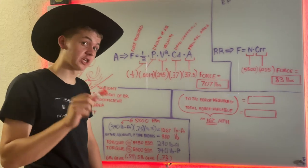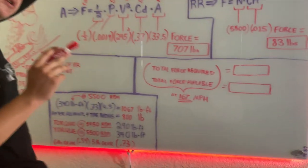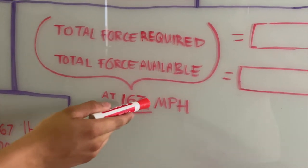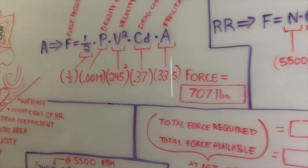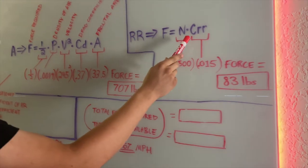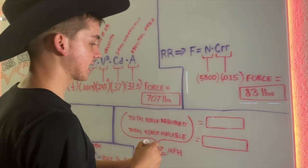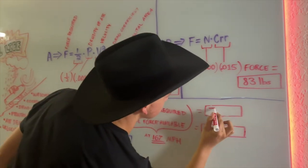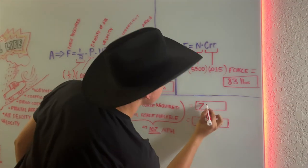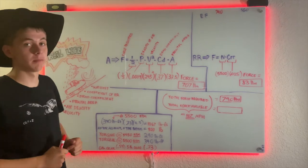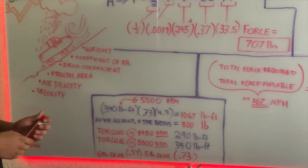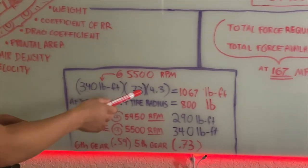This made a lot of changes. First off, it changed our top speed from 223 miles an hour to 167 miles per hour. This decreased our wind load significantly down to 707 pounds. We add that to the rolling resistance, which did not change, and that comes out to a new total force required to overcome rolling resistance and aerodynamic drag: 790 pounds.